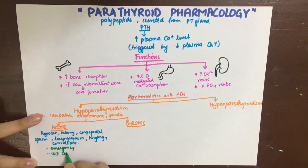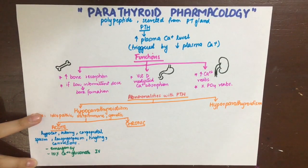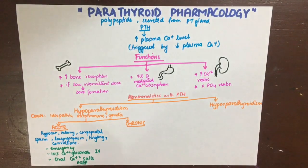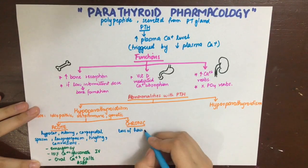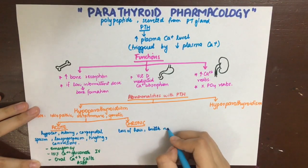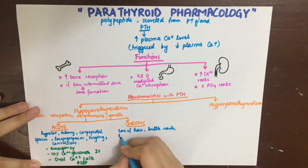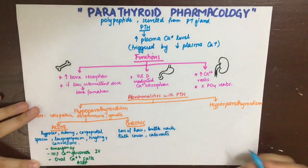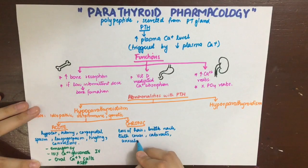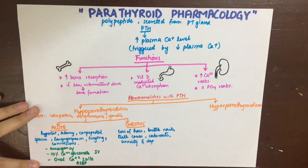A chronic hypoparathyroid patient will present with loss of hair, brittle fingernails, dental caries, cataracts, anxiety, and depression. Cataracts are associated with decreased aqueous humor calcium concentration and increased sodium in the lens.